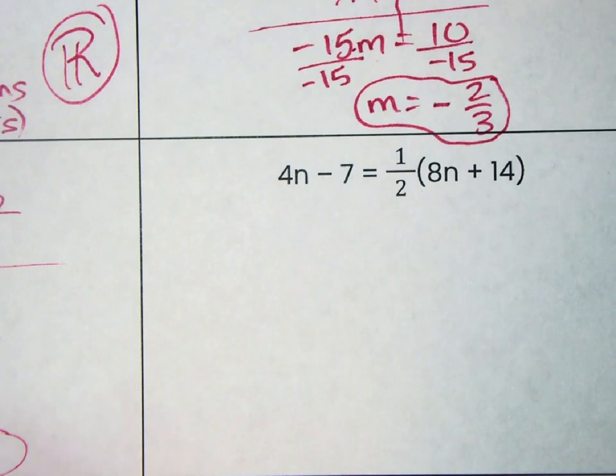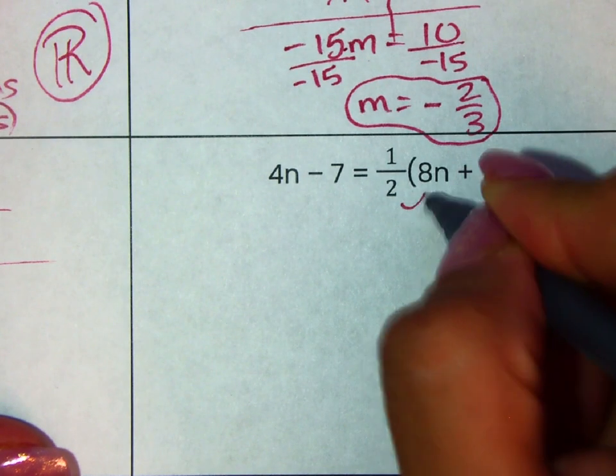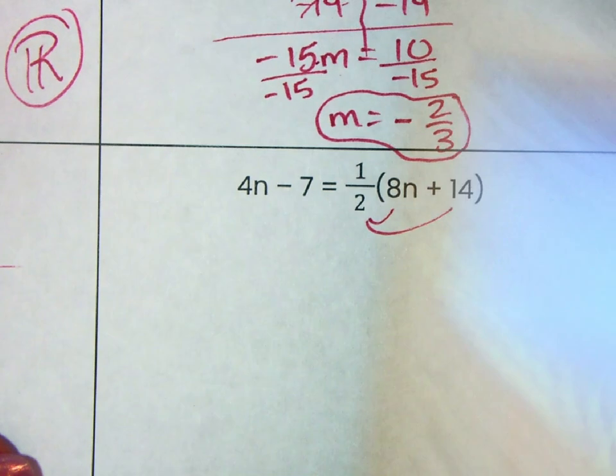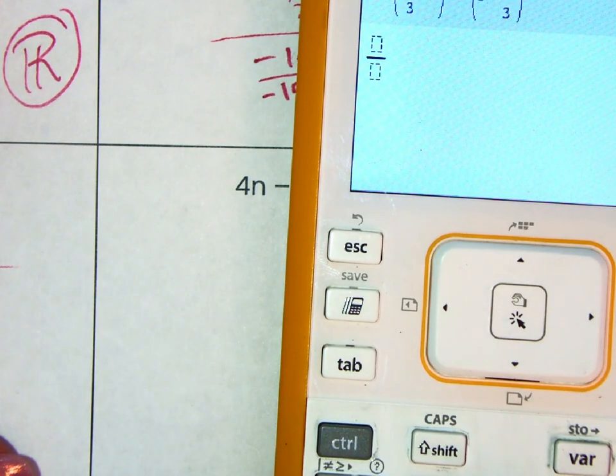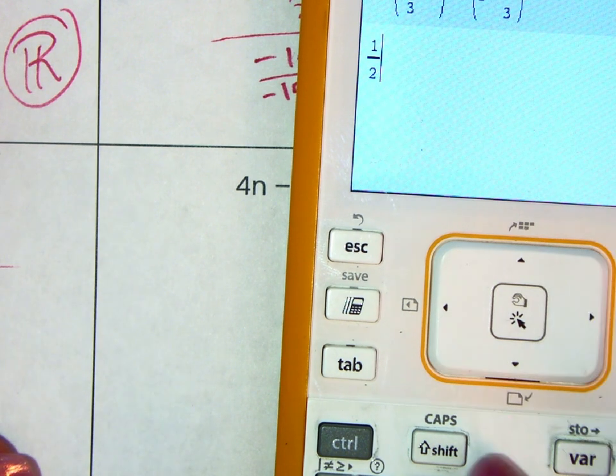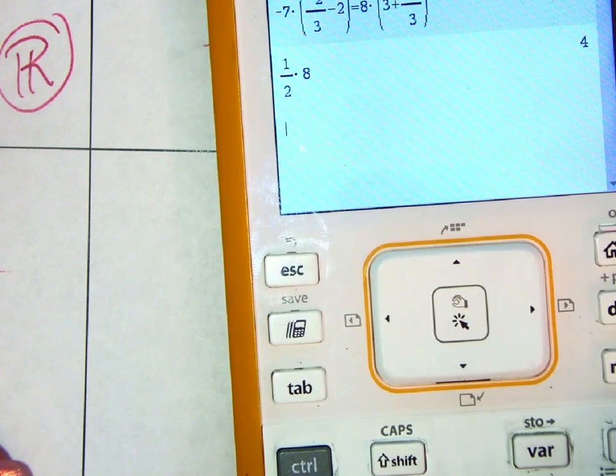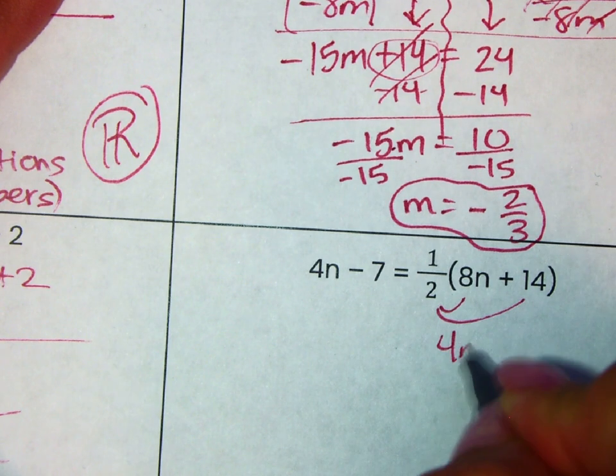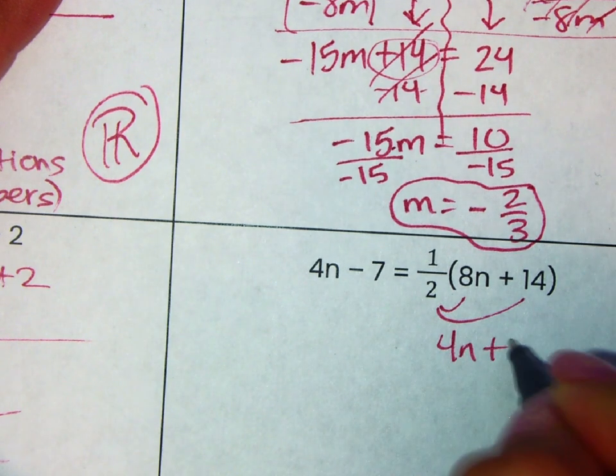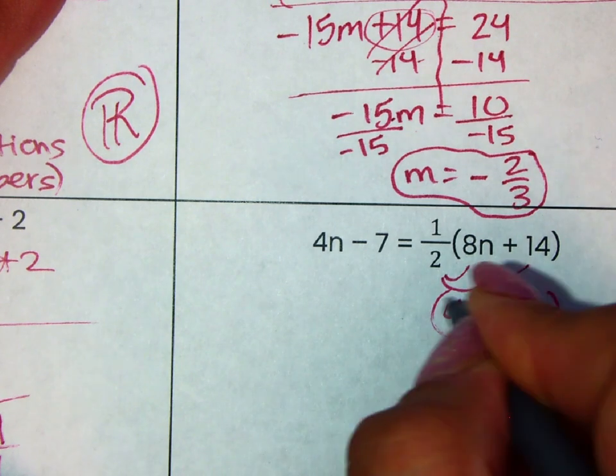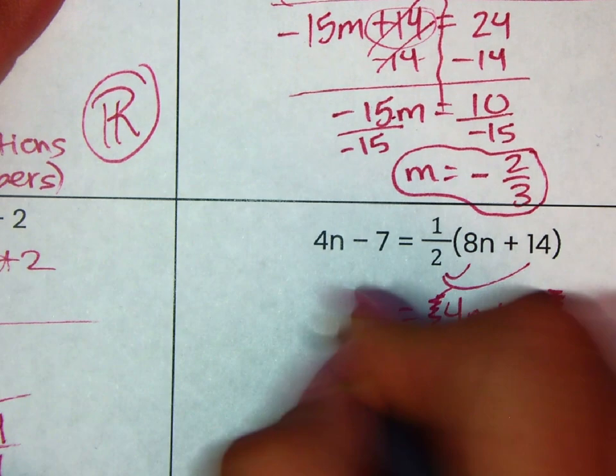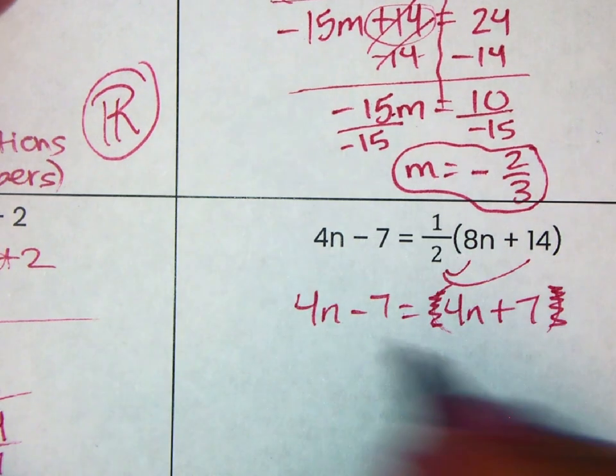To finish up this video, let me go ahead and just quickly distribute this 1 half into the 8n. So you're doing 1 half times 8 right there. And then what do you do when you do 1 half times 8? It's actually dividing by 2. But let me show you. 1 half times 8 is 4. So that's just asking yourself, what's half of 8? 4. And what's half of 14? 7. I don't need the parentheses no more. Because that's the whole point of distributing.